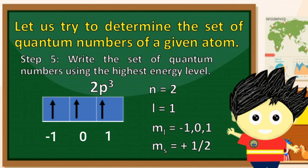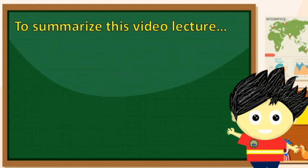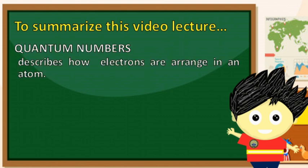Ngunit paano naman natin malalaman ang eksaktong value ng spin quantum number? Balikan natin ang electron orbital diagram ng nitrogen. Mapapansin natin na ang bawat orbitals ng 2p3 ay filled out ng line ray facing upward. Tandaan natin na upang masabi natin na ang ms ay magiging positive, kailangan natatapos ang distribution of electrons sa isang line ray facing upwards. At upang magkaroon naman tayo ng negative 1/2 na ms, kailangan matapos ang distribution sa line ray facing downwards. Kung kaya, ang value ng ms ng ating nitrogen atom ay positive 1/2 dahil sa highest energy level ay natapos ito sa line ray facing upward. Ngayon, basahin natin ang kumpletong set of quantum numbers ng nitrogen atom.